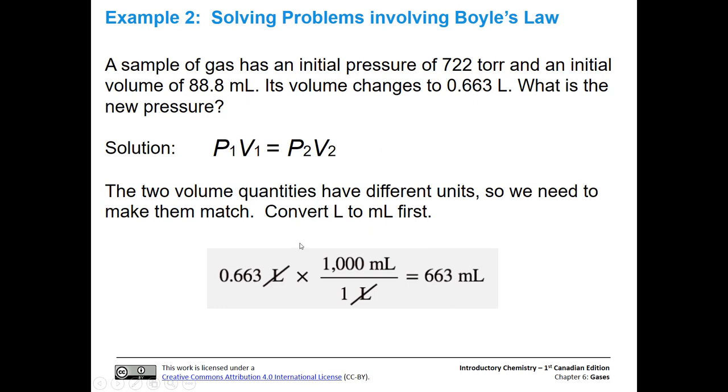So converting. We know that 1000 milliliters is equal to one liter, we're starting off with liters. And that's in the numerator. So we're going to have liters in the bottom of our conversion factor in the denominator, and milliliters on the top. And then we're going to do our math after we've canceled out our liter units, 0.663 times 1000 is going to give us 663 milliliters. So there is our V2 now in the correct unit. So now we're ready to plug everything into Boyle's law.